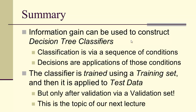In summary, information gain can be used to construct decision tree classifiers via a sequence of conditions and decisions. The set of data used to train the model is a training set, and the unclassified observations — like whether someone is getting dessert — are called test data. We'll also look at validation sets in the next video and lecture.